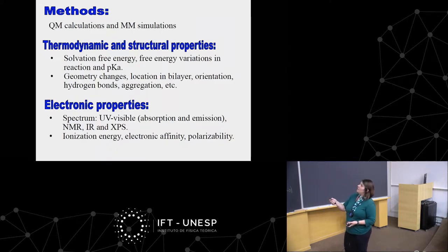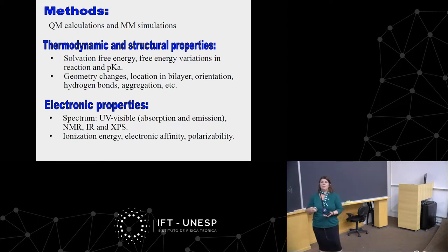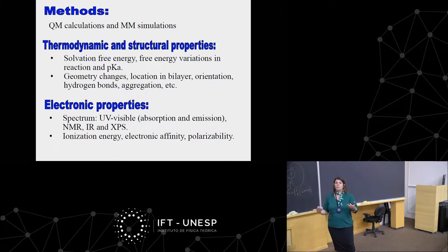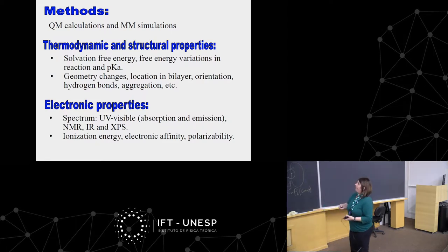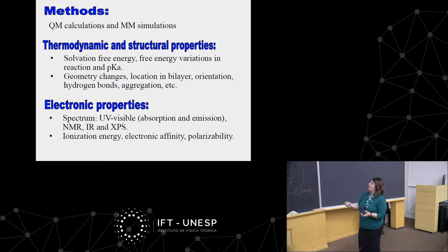We use methods that combine quantum mechanics and molecular mechanics. In molecular mechanics, we mimic quantum mechanical interactions using classical equations — molecules interact not by first-principles equations but by a classical force field, an empirical equation full of parameters. The idea is how to combine these two methodologies in a hybrid method to avoid very large computational cost. Using both methodologies together, we can calculate thermodynamic and structural properties like free energy differences, reactive processes, pKa, geometric changes, and orientation.